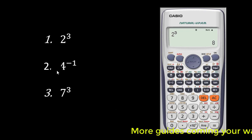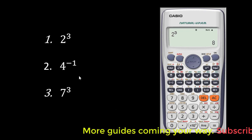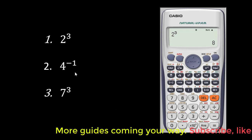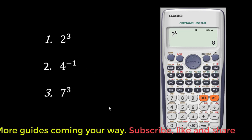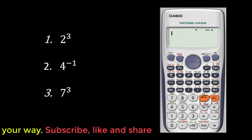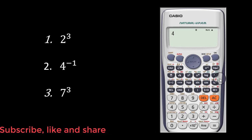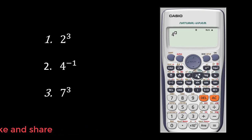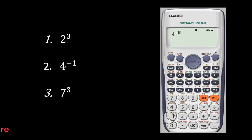Now let's look at the second one: 4 to the power negative 1. Alright, so let me press the all-clear key. You press 4, then you press the exponent button and then you key in negative 1. And now that gives you 1 over 4, or 1 quarter.